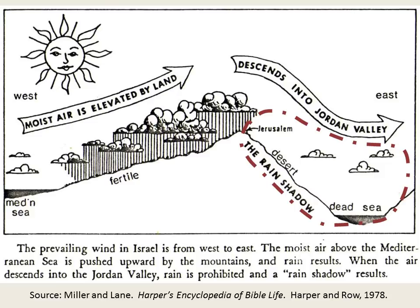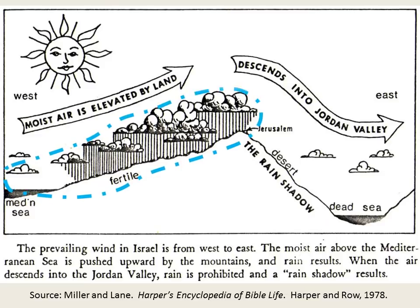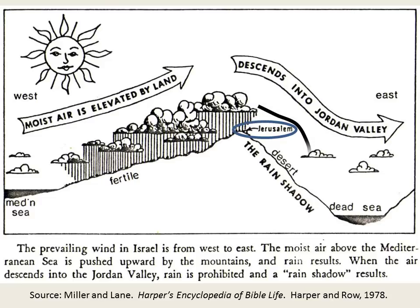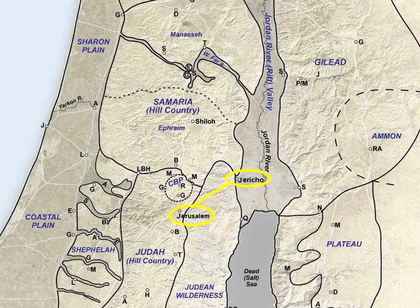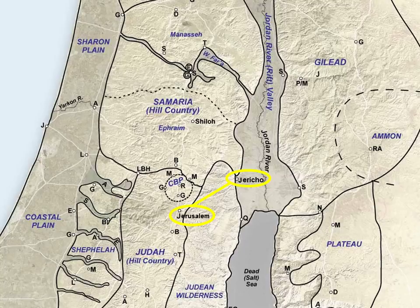Note on this cross-section diagram how most of the rain falls on the western side of the hill country watershed. Jerusalem sits here on the watershed, but east of Jerusalem there is a severe drop in elevation into the rift valley. The clouds dissipate, and less and less rain falls the further one descends toward the Dead Sea. Jerusalem can get 24 inches of rain a year, but only 15 miles away, Jericho in the rift valley near the Dead Sea gets only 4 inches of rain per year. This variance in rainfall from region to region contributes to great geographical variety in the land.